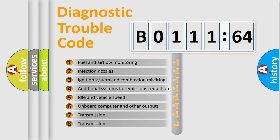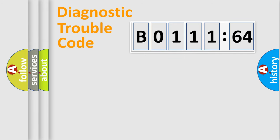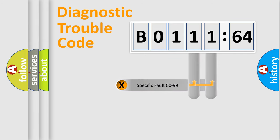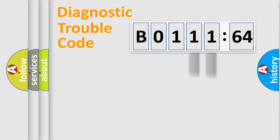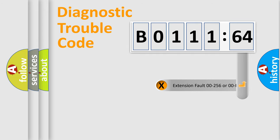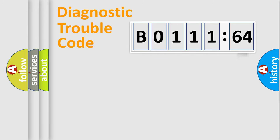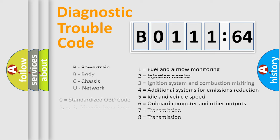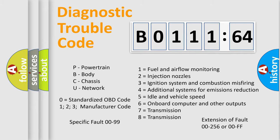The third character specifies a subset of errors. The distribution shown is valid only for the standardized DTC code. Only the last two characters define the specific fault of the group. The add-on to the error code serves to specify the status in more detail — for example, a short to the ground. Let's not forget that such a division is valid only if the second character code is expressed by the number zero.